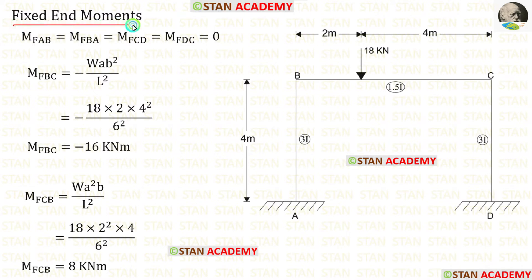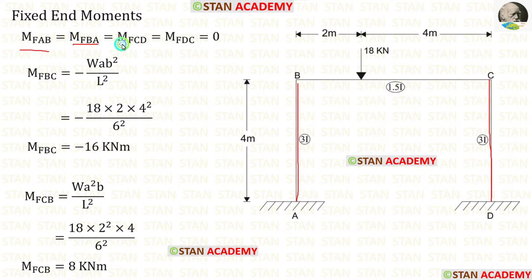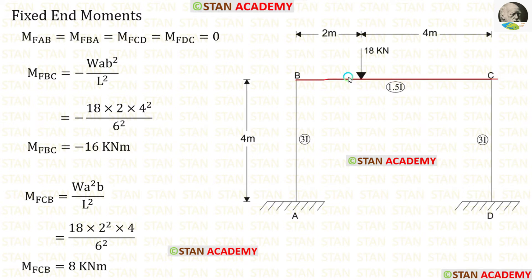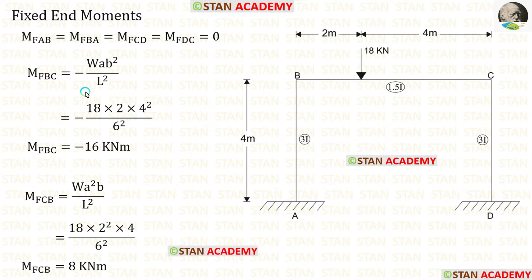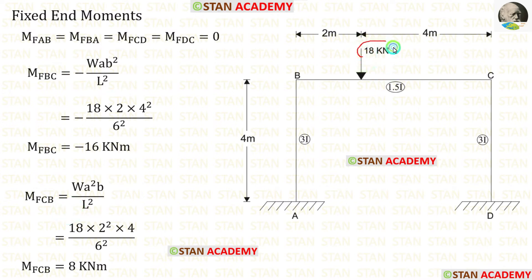Now let us find the fixed end moments. In columns AB and DC there are no loads, so the fixed end moments M_AB, M_BA, M_CD, and M_DC will be 0. In beam BC there is an eccentric point load of 18 kN. The formulas to find the fixed end moments are: minus W·A·B² / L² and plus W·A²·B / L². Here W = 18, A = 2, B = 4, and L = 6. Applying these values, we get M_BC and M_CB.